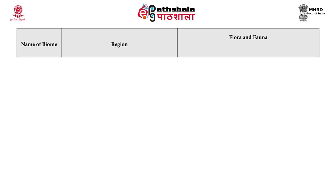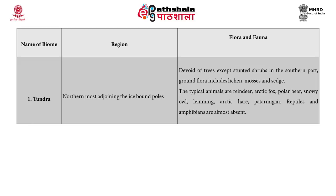The different types of habitats or biomes are as follows. First, the tundra biome: regions found in the northernmost areas adjoining the ice-bound poles. Flora and fauna: devoid of trees except stunted shrubs in the southern part; ground flora includes lichens, mosses, and sedges. The typical animals are reindeer, arctic fox, polar bear, snowy owl, lemmings, and arctic hare; reptiles and amphibians are almost absent.